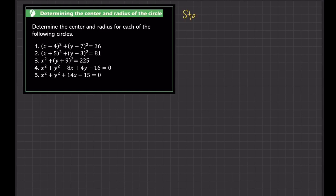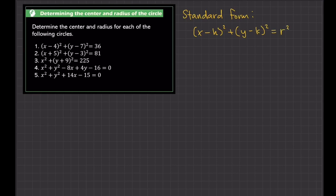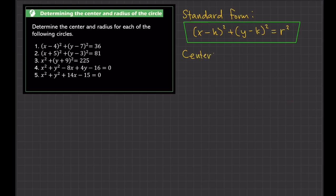So the equation in standard form is: x minus h squared plus y minus k squared equals r squared. That's the equation in standard form. So if it's written in this form, we can easily identify the center and radius. The center of the circle is the point (h, k).